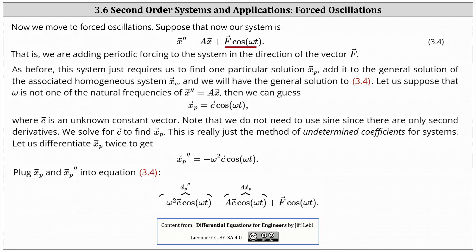Welcome to a lesson on second-order systems of ODEs and applications with forced oscillations. Suppose our system is x double prime equals A times x plus F times cosine of omega t — that is, we are adding periodic forcing to the system in the direction of vector F. This system requires us to find one particular solution x sub p, add it to the general solution of the associated homogeneous system x sub c. Summing x sub p and x sub c gives the general solution to equation 3.4.